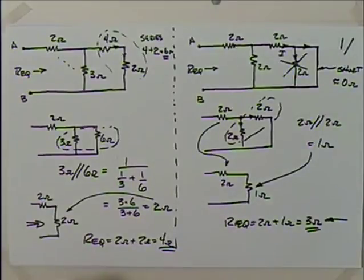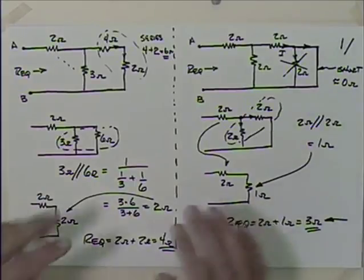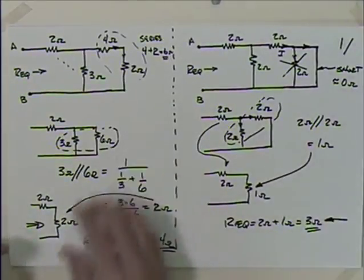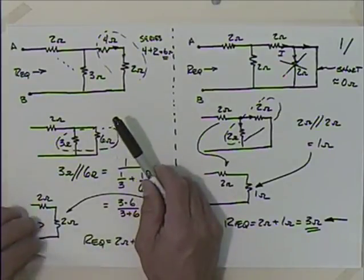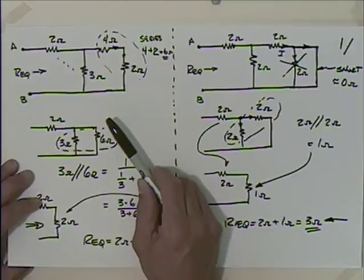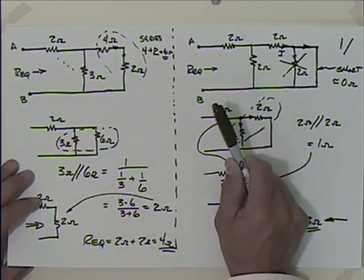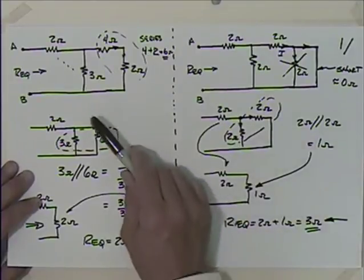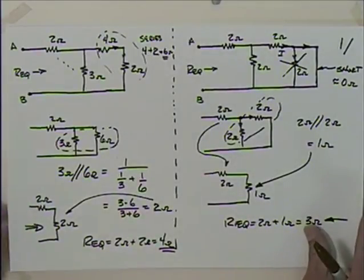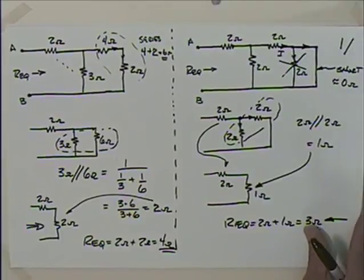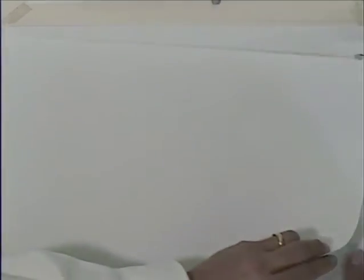You've got some homework problems that talk about that, and I wanted to bring it out. Recapping from last time: when you have parallel resistance, as you add resistance in parallel you decrease the total resistance. When you add resistance in series, you increase the total resistance. Let's move on and look at other things we put in series and parallel.